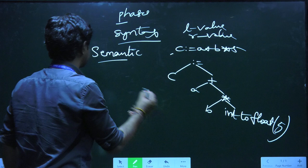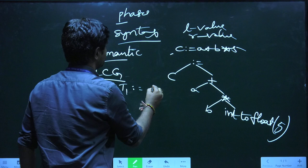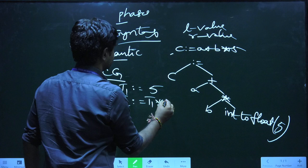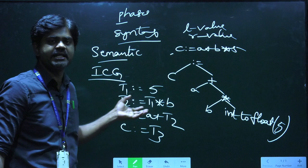The next phase is intermediate code generation. Here we take some intermediate statements: T1 equal to 5, T2 equal to T1 into B, T3 equal to A plus T2, and finally C equal to T3. We construct an intermediate code using these temporary statements.